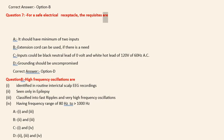Question 7: For a safe electrical receptacle, the requisites are: A. It should have minimum of two inputs. B. Extension cord can be used if there is a need. C. Inputs could be black neutral lead of 0V and white hot lead of 120V of 60Hz AC. D. Grounding should be uncompromised. Correct answer: Option D.